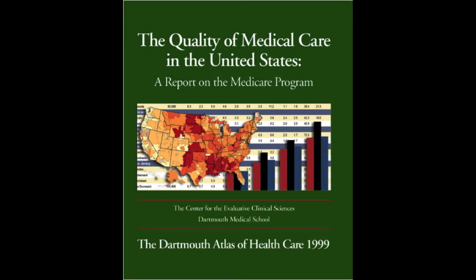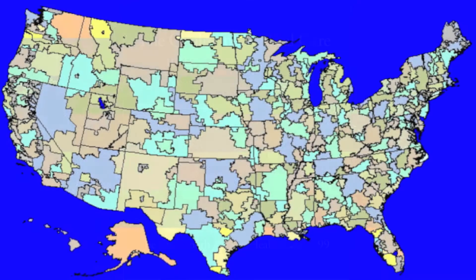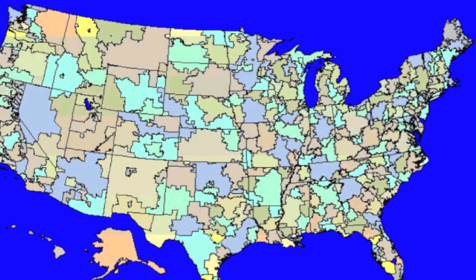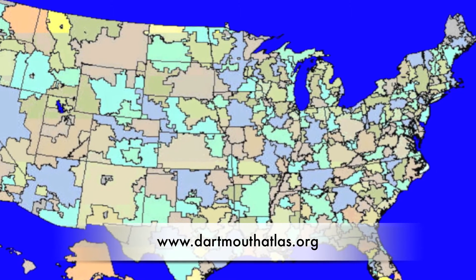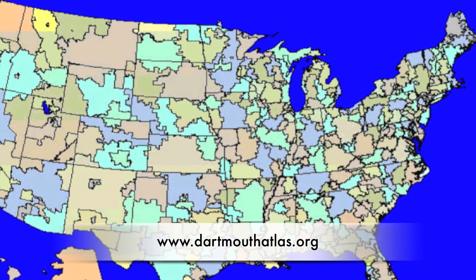The Dartmouth Atlas has been a familiar part of the American health policy landscape since the mid-1990s. The Atlas monitors healthcare utilization and outcomes in 306 hospital referral regions across the United States.